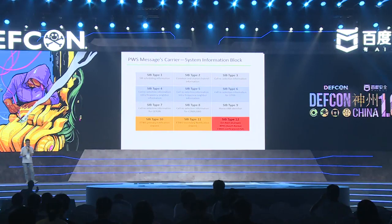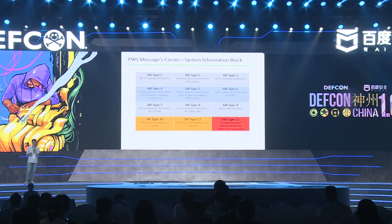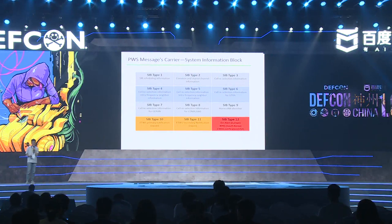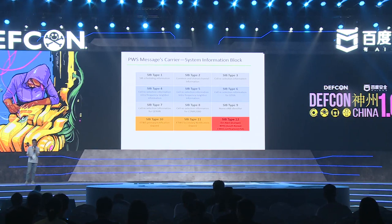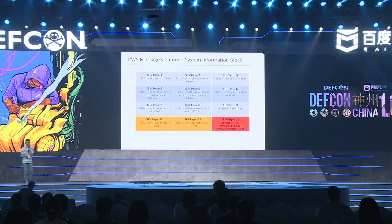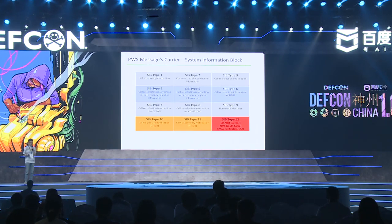Now we are going to forge the fake warning message. The warning message is defined in the LTE System Information Block. There are 13 types of information blocks. SIB10 and SIB11 are used for transmitting the ETWS warning message — they are used for Japan. SIB12 is used to transmit the other three types of warning messages.